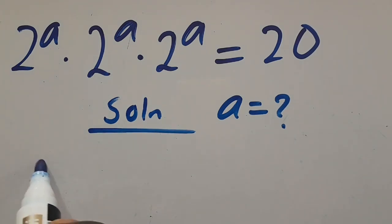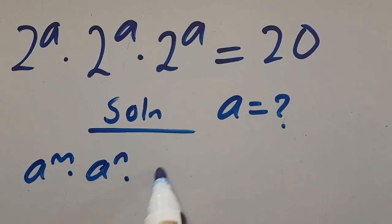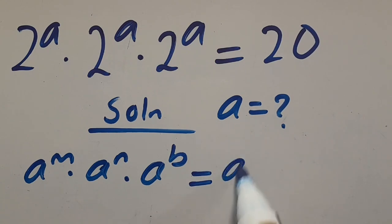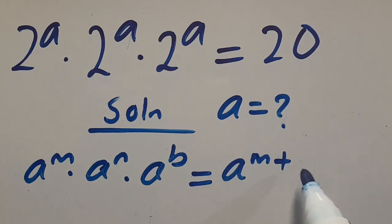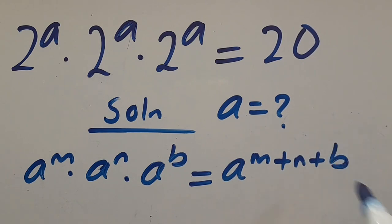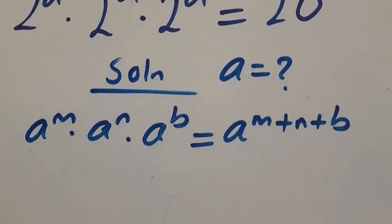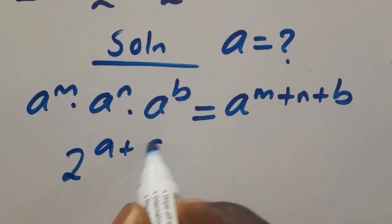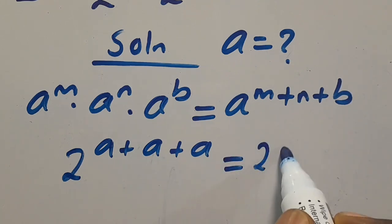Recall: when you have A to the power of M multiplied by A to the power of N multiplied by A to the power of B — so far they have the same base with different powers — from the law of indices we can take one base and add the powers together as M plus N plus B. So by applying it here, let's take one base as 2, giving us 2 to the power of A plus A plus A.